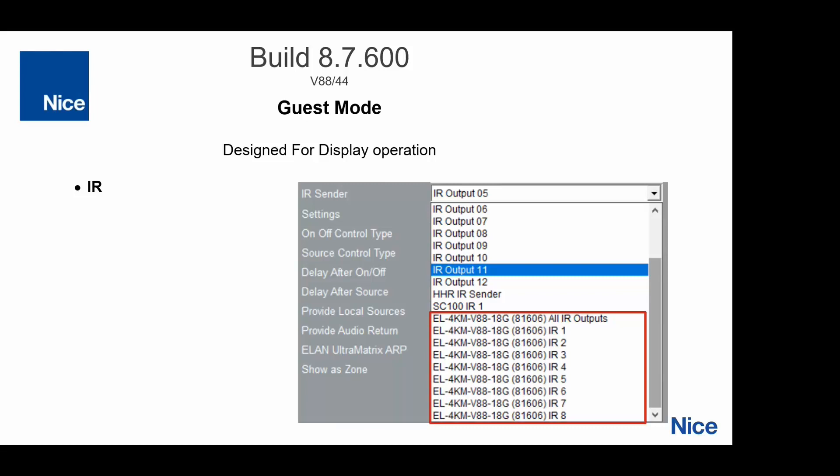That's why we call it guest mode. IR is designed for display operation. You have an HD-based T receiver connected with the emitter on that RX, and all you have to do is tell the IR where it's going. You can see all the V88 outputs, one through eight, tell it what receiver it's going to, and we will transmit the IR over the ethernet and send it out to the right one. This makes IR for displays much faster, quicker, and cleaner in a rack — no special cables needed.